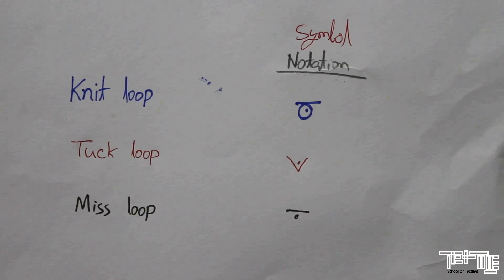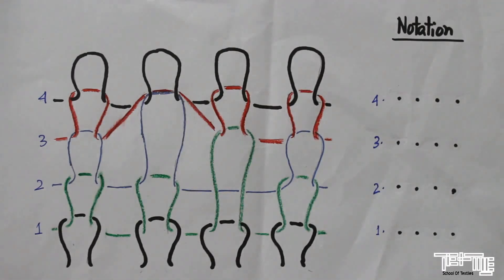Here are the notation symbols used for knit, tuck, and miss loop. There is a looping diagram shown in the website. From this we will find the notation.